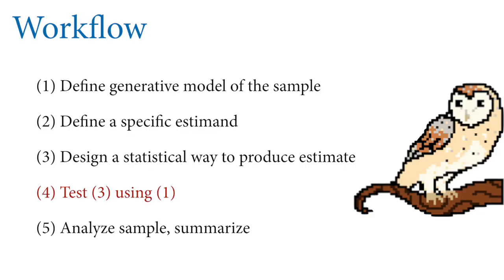We have designed a Bayesian estimator. Conditional on the generative model, this estimator is optimal — you cannot do better than this if your model is correct. The model here doesn't mean a particular value of p; it means the generative hypothesis about how the garden is drawn given a particular value of p. Now we want to test, and I want to spend a little time on testing before moving to summary and analysis.